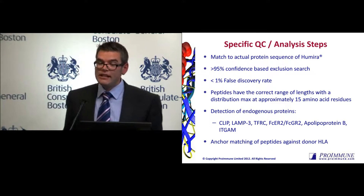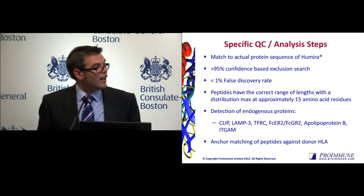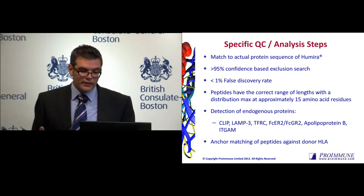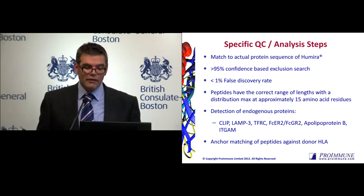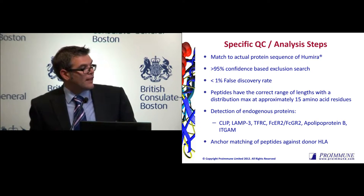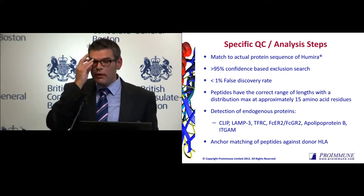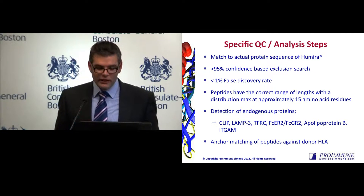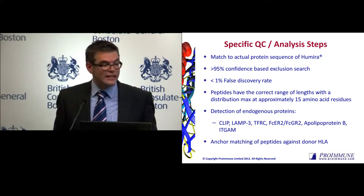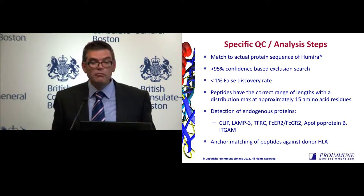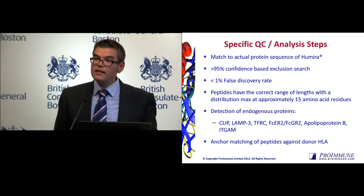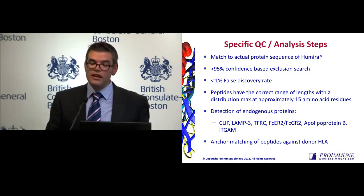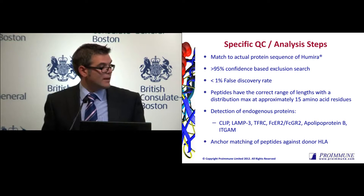The peptides we see bound to MHC class 2 are, as expected from the literature, typically between 9–10 amino acids up to 15–20 amino acids, with a distribution maximum around 15 amino acids. We also look at endogenous proteins — the majority of peptides presented in MHC class 2 are your internal endogenous proteins expressed by the dendritic cell. If a donor doesn't express a panel of these proteins — say 3 out of 6 — they're excluded from the analysis. We only include donors which pass a number of quite stringent acceptance criteria.